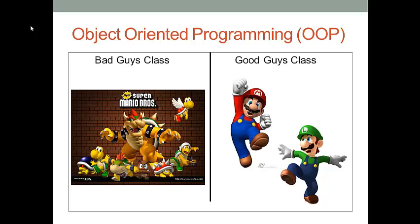This is what we can do. First, let's look at all these characters in the game. We found we can classify them into two groups. The first group is the bad guys, and the second group is the good guys. Inside the bad guys group, no matter how many turtles, mushrooms, or big bosses we have, they have so many things in common. For instance, all of them can run, all of them can shoot fires, and all of them try to kill Mario Bros. We want to summarize all these common properties, characteristics, or capabilities among bad guys into a model.